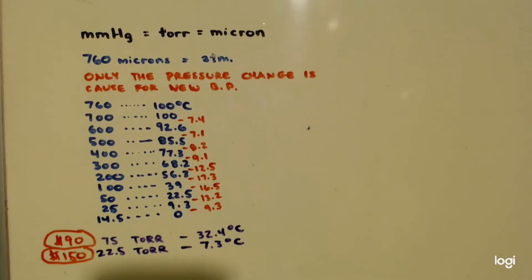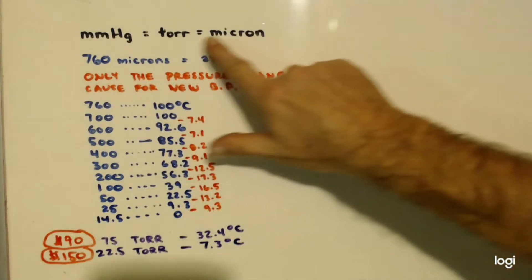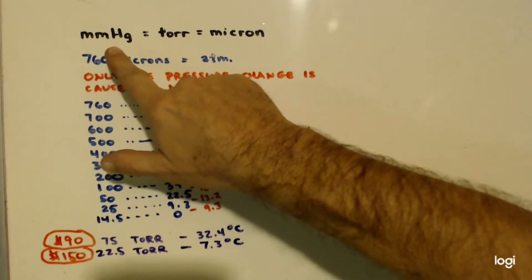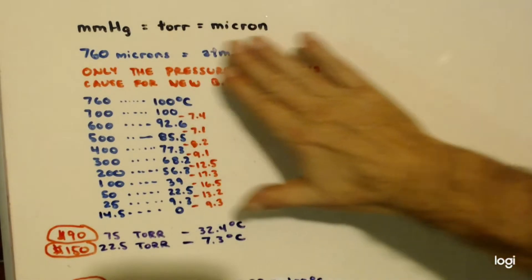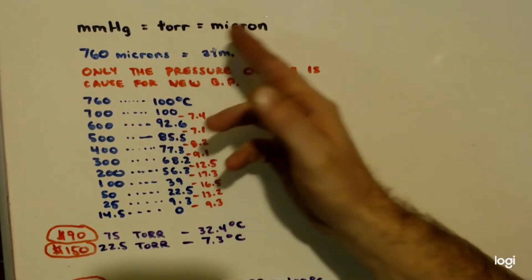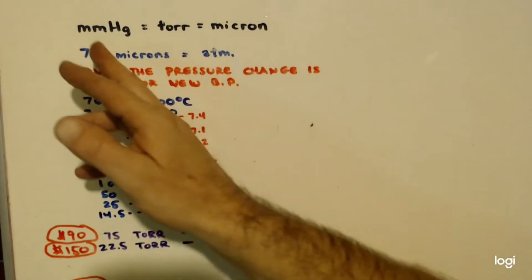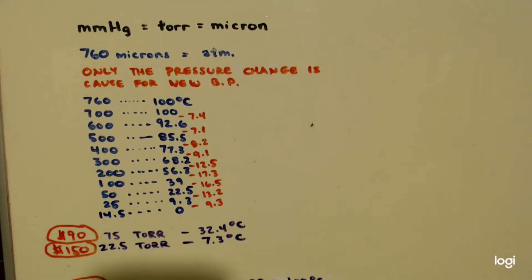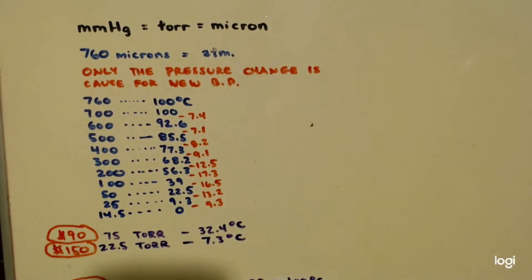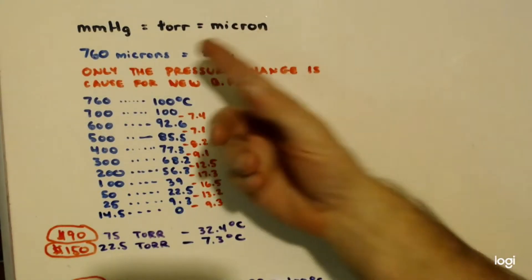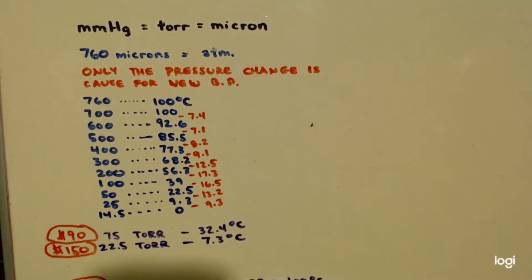Let's first go over what air pressure is. All units should never be used except for these three: millimeter of mercury, Torr, or micron. Keep in mind they are all exactly the same thing. If you have one Torr you have one micron; you have 10 Torr you have 10 millimeters of mercury. These are preferred because instead of saying millimeter of mercury, you can just say micron or Torr — it's easy.